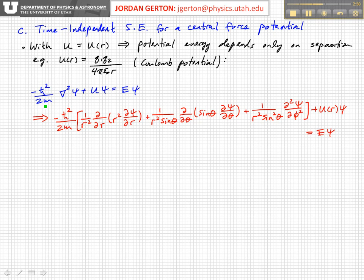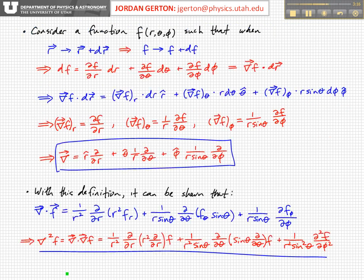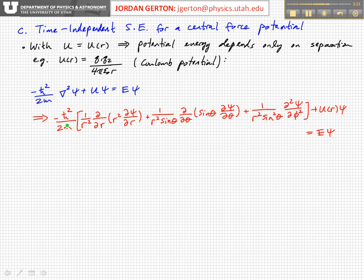So remember, generically, the Schrödinger equation, the time-independent Schrödinger equation, is the Hamiltonian operator on the left-hand side, minus h-bar squared over 2m, the Laplacian on psi, plus the potential energy u times psi, is equal to the energy eigenvalue times psi. And so now we basically just plug in our expression from the previous view graph right here for the Laplace operator, del squared, and we get minus h-bar squared over 2m times this whole nasty thing in brackets, plus u of r times psi is equal to e psi.